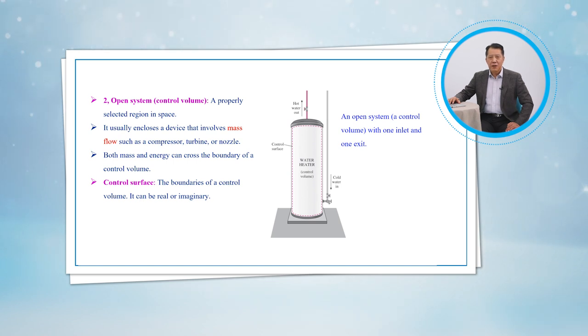In general, any arbitrary region in space can be selected as a control volume. There are no concrete rules for the selection of control volumes, but the proper choice certainly makes the analysis much easier. If we were to analyze the flow of air through a nozzle, a good choice for the control volume would be the region within the nozzle.